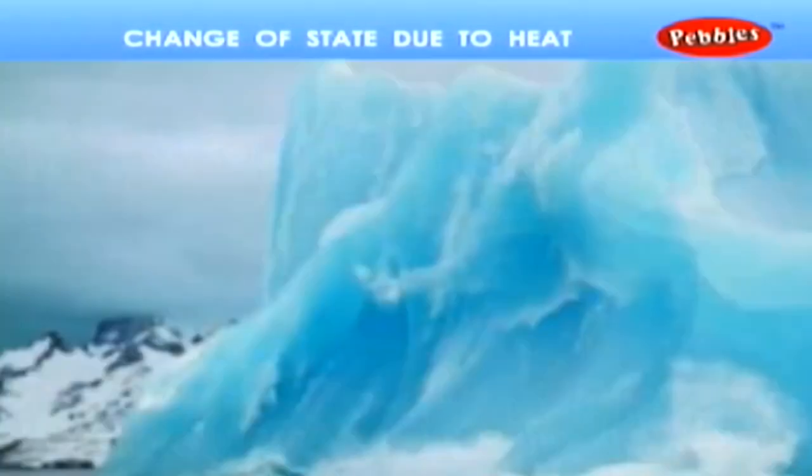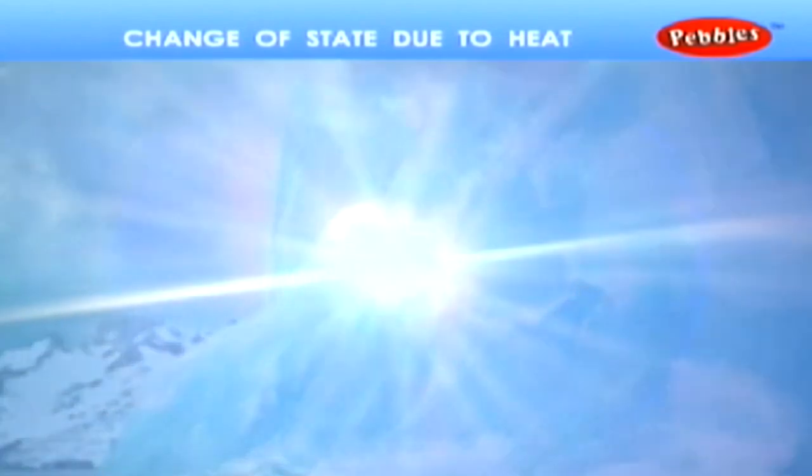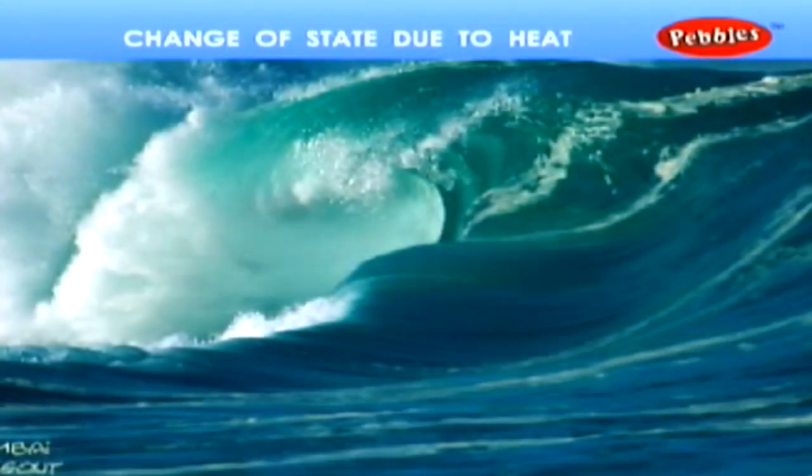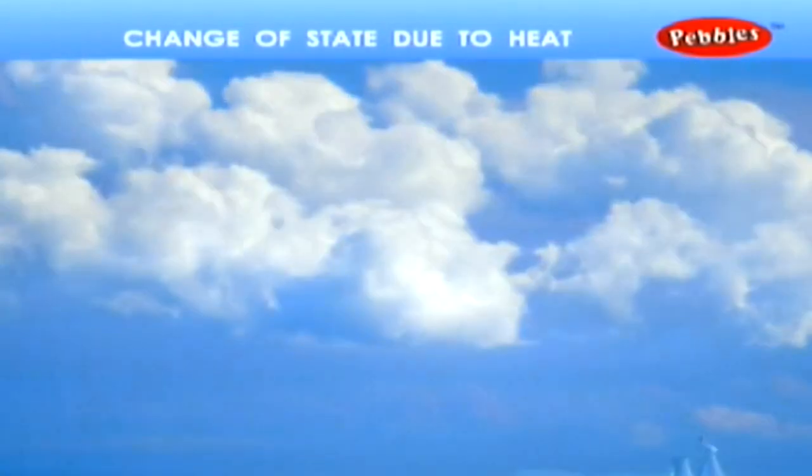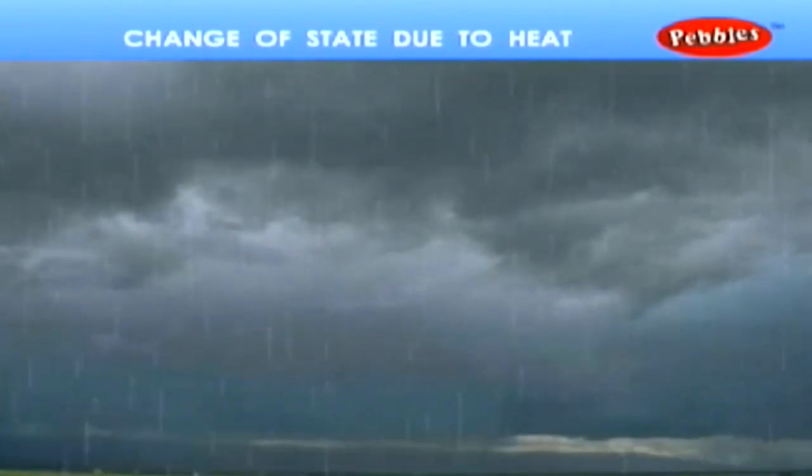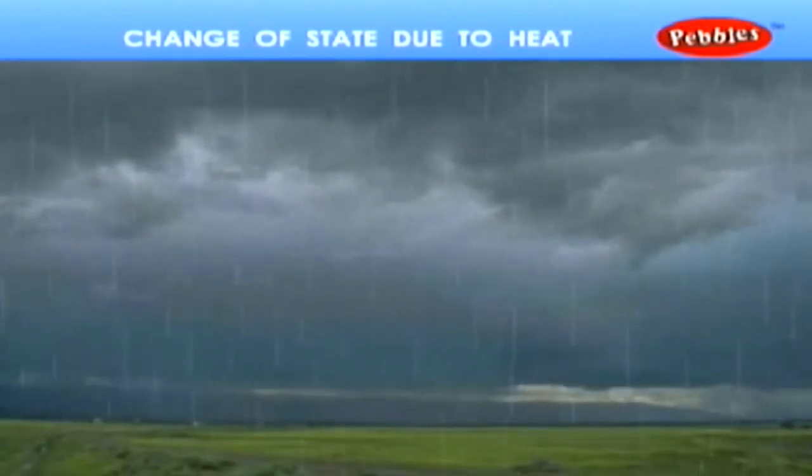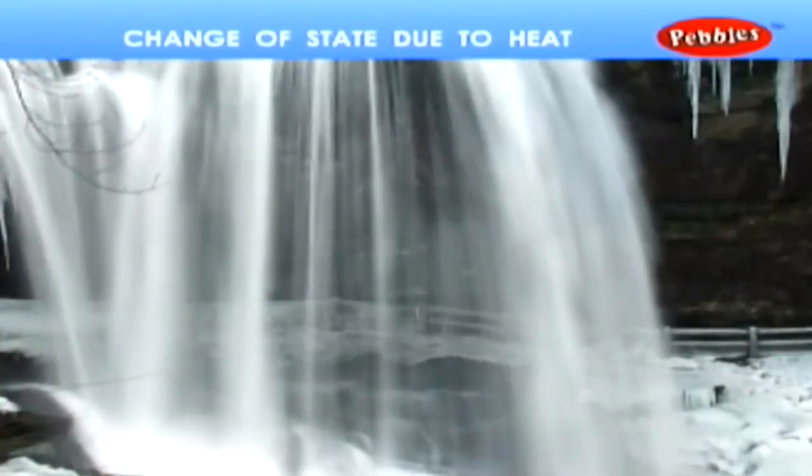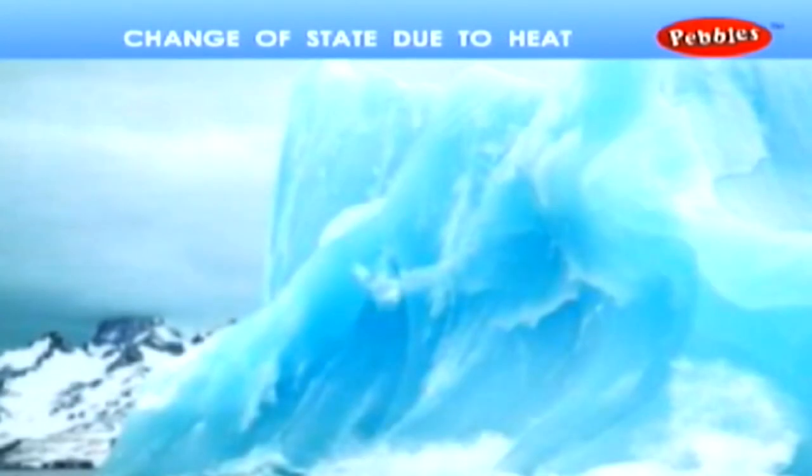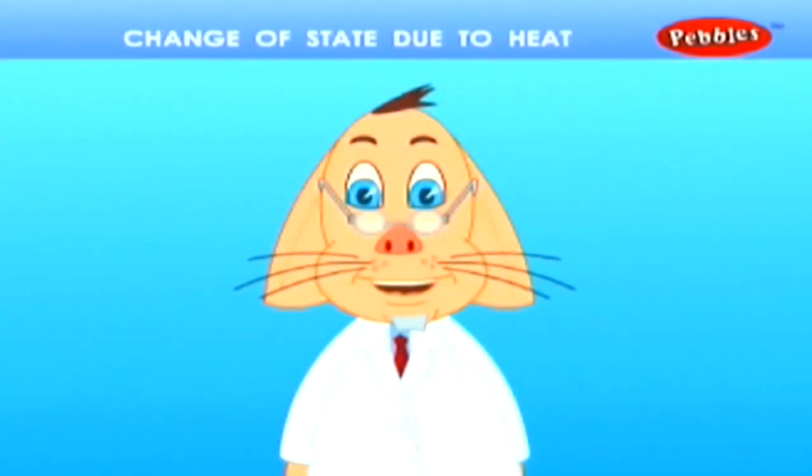Change of state due to heat. Due to the atmospheric heat, the solid state ice mountains melt to the liquid state and join the sea. Again, the liquid state water vaporizes to gas and forms cloud. The gas state cloud cools and gets converted as liquid state rain. This takes place as a cycle. Let us see the experiment based on this principle.